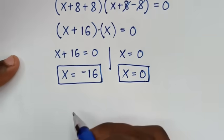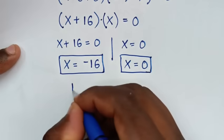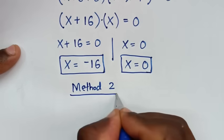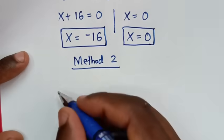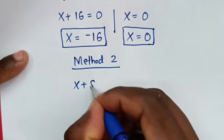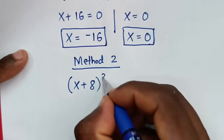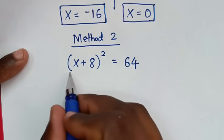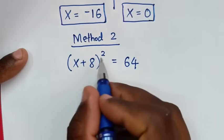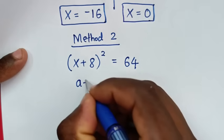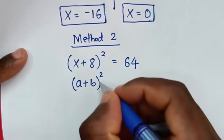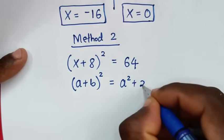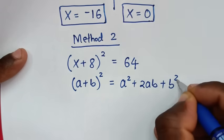Now let's solve this problem using Method 2. From our problem (x + 8)² = 64, the part (x + 8)² is in the form of (a + b)², which expands to a² + 2ab + b².